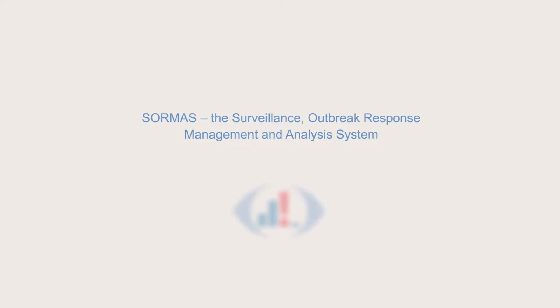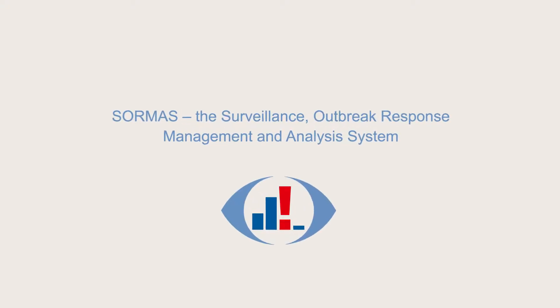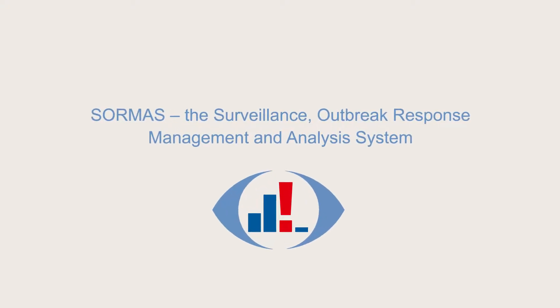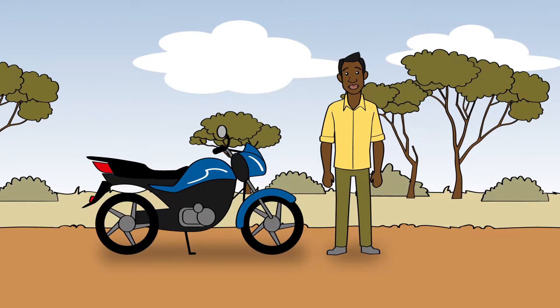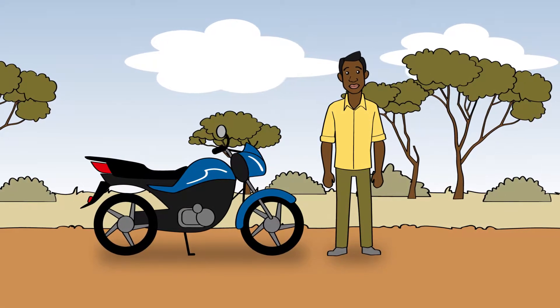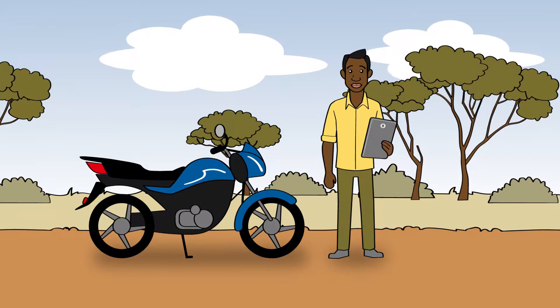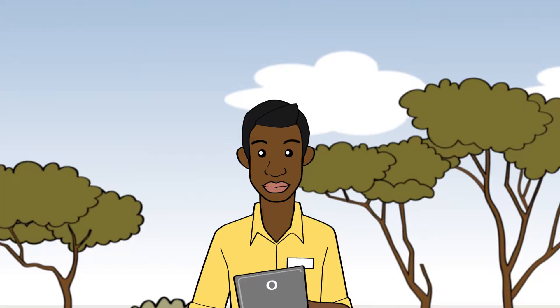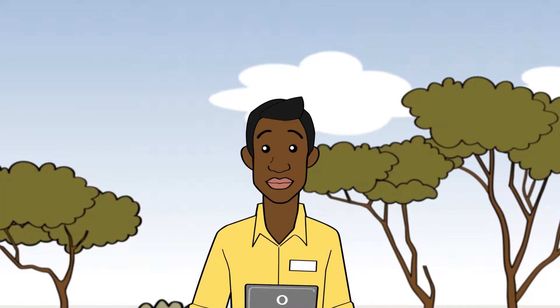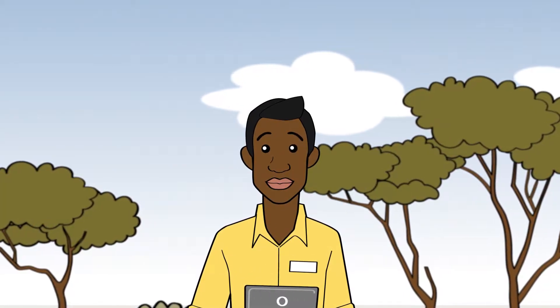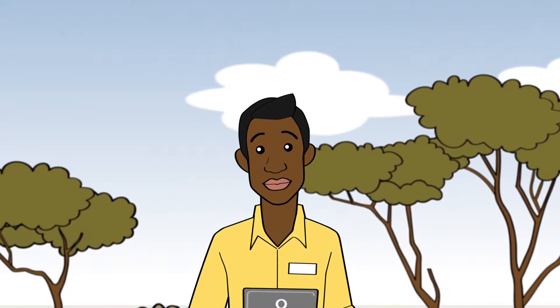SORMASS, the Surveillance Outbreak Response Management and Analysis System. How to use it as a contact officer. As a contact officer, you are responsible to locate and interview persons who had contact to a case and to follow up their health status on a daily basis. This helps preventing the spread of diseases.